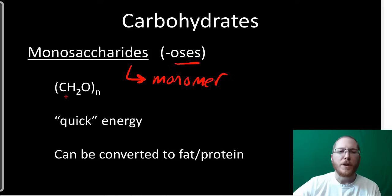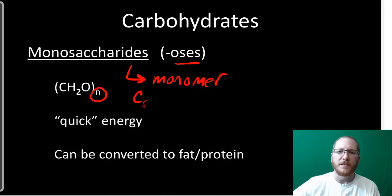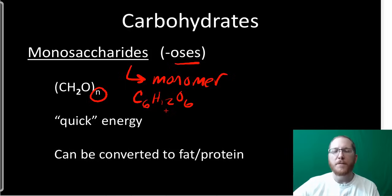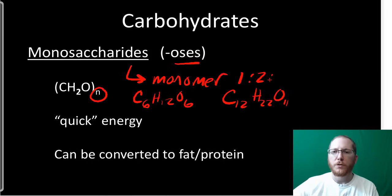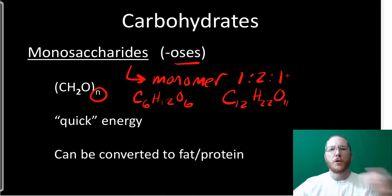Monosaccharides typically have a ratio of carbon, hydrogen, and oxygen that's CH₂O — not that their formula is exactly CH₂O, but some multiple of that. Glucose is C₆H₁₂O₆. Sometimes when we bind them together, because we removed the water, those numbers will be slightly off from the 1:2:1 ratio. But they'll be very close — for example, C₁₂H₂₂O₁₁ when two are stuck together. That 1:2:1 ratio is critical in identifying something as a carbohydrate.